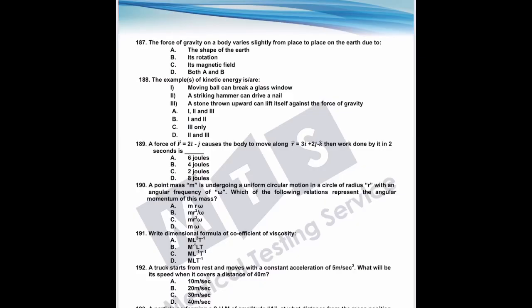Question 187: force of gravity on a body varies slightly from place to place on Earth due to the shape of the Earth and its rotation. Earth has an oval shape — gravity is less at poles (greater distance) and more at the equator. Also, the faster Earth rotates the less gravity; if Earth stopped rotating gravity would be maximum.